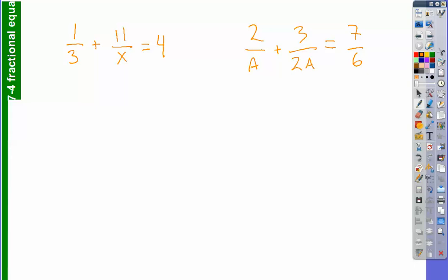So what would be the common denominator? If we could find a common denominator for these fractions and multiply both sides of my equal sign by that common denominator, I'm willing to bet the denominators will disappear. Let's see what happens. So if I were to add 1/3 and 11 over x together, what would the common denominator be? Michael? 3x. It would be 3x.